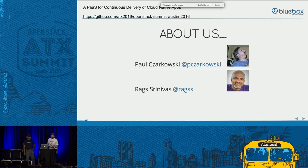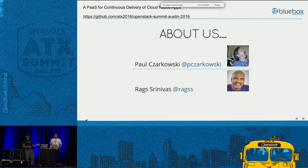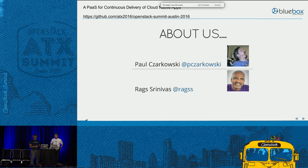Quickly, about us: my name is Paul Tchaikovsky. I am a cloud engineer, systems engineer, something like that at Blue Box. I do infrastructure automation and I also spend a lot of time herding cats. My name is Raghavan Srinivas, I go by Rags. Paul is more on the ops side of the world and I'm more on the dev side of the world, and we are both empathetic to each other. That's kind of the whole idea behind doing this talk — to give a little bit of operator and developer perspective.